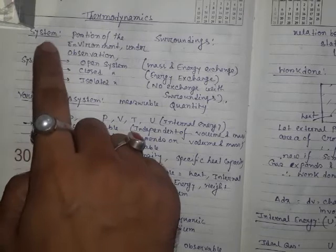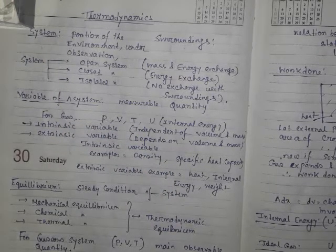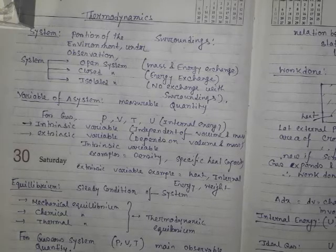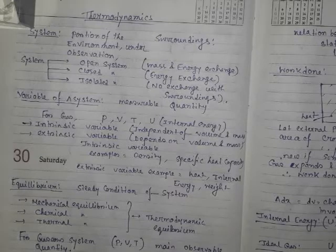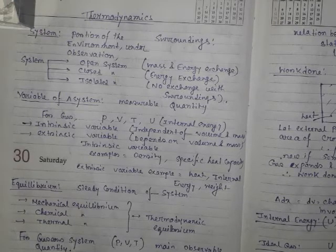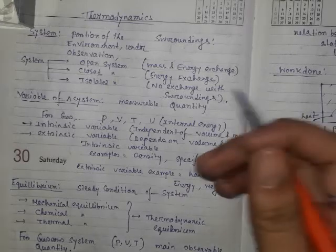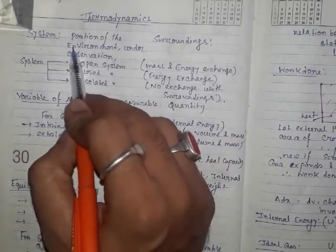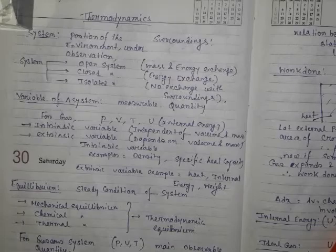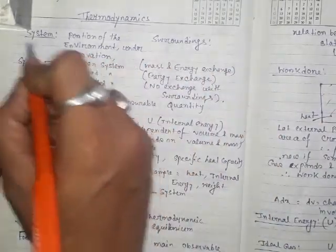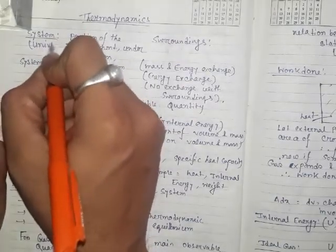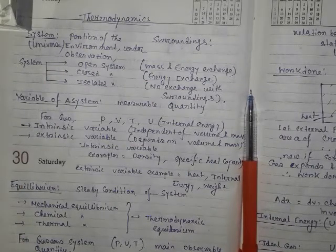One term is 'system'. First we have to know about the environment — or more precisely, the universe. The universe is everything: things we see, feel — me, you, your family, your home, everything constitutes the universe. System is the part of the universe which is under observation, being examined by any researcher or examiner.